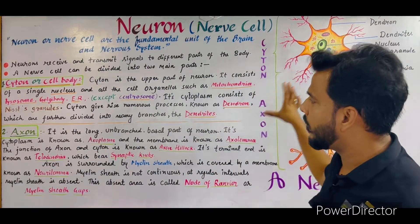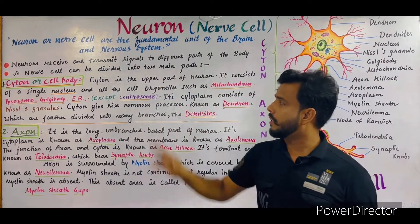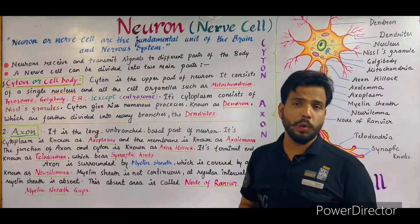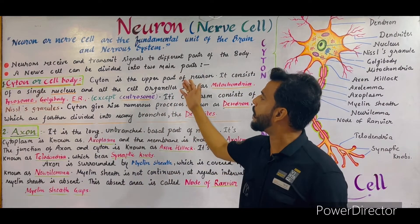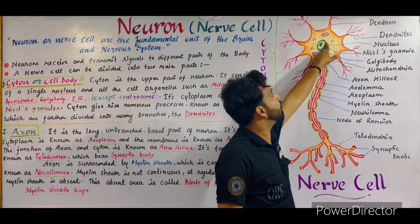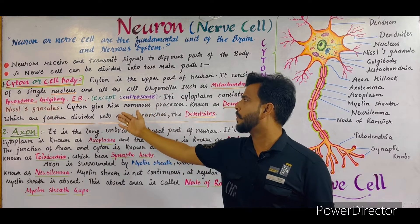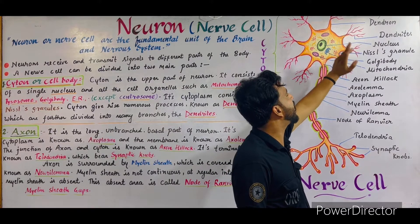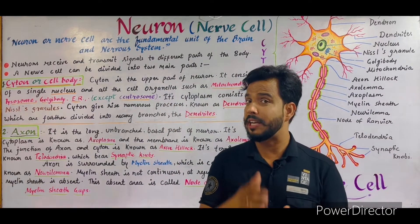Now I will tell you the theory in detail. A neuron or nerve cell can be divided into two main parts. The first is the cytone or cell body — the upper part of the neuron. It consists of a single nucleus and all cell organelles such as mitochondria, Golgi body, lysosome, and endoplasmic reticulum, except the centrosome. The centrosome is totally absent because cell division does not take place in the neuron, and the centrosome helps in cell division.